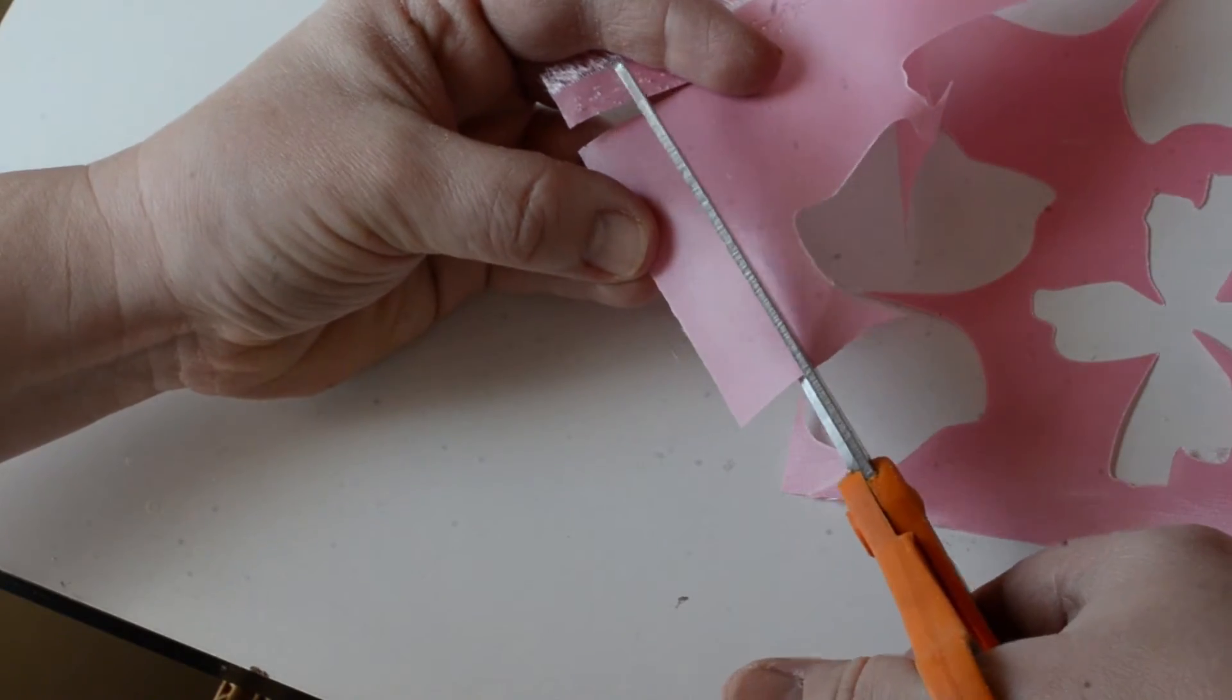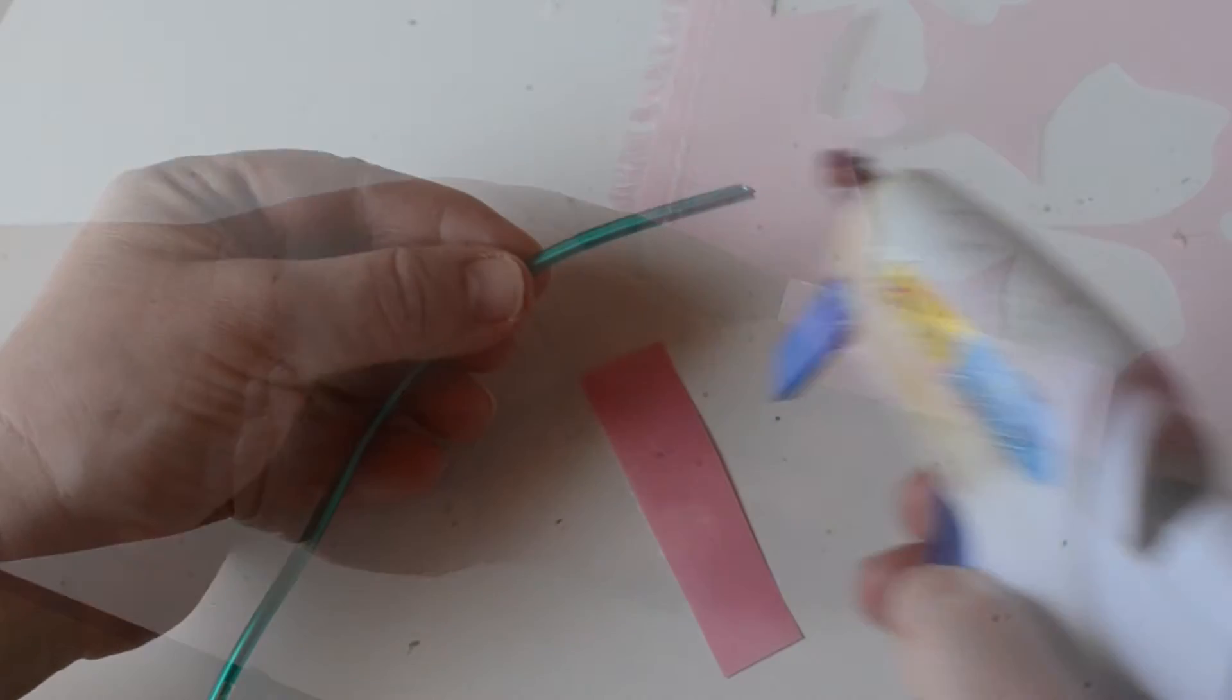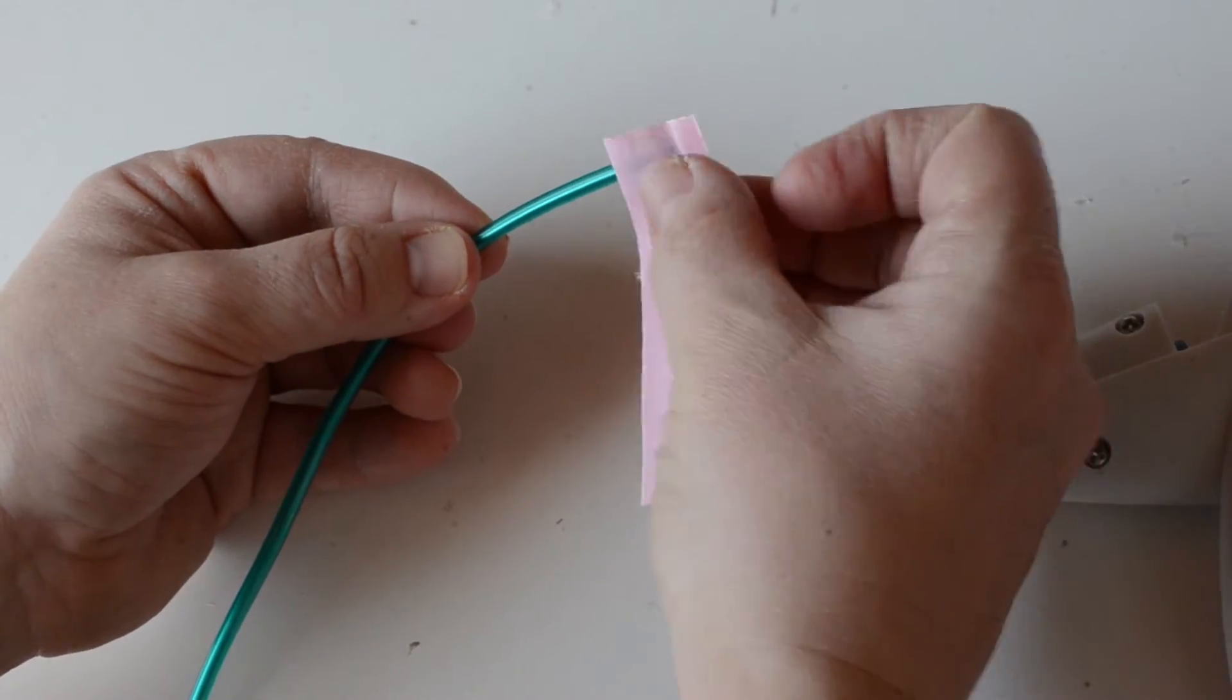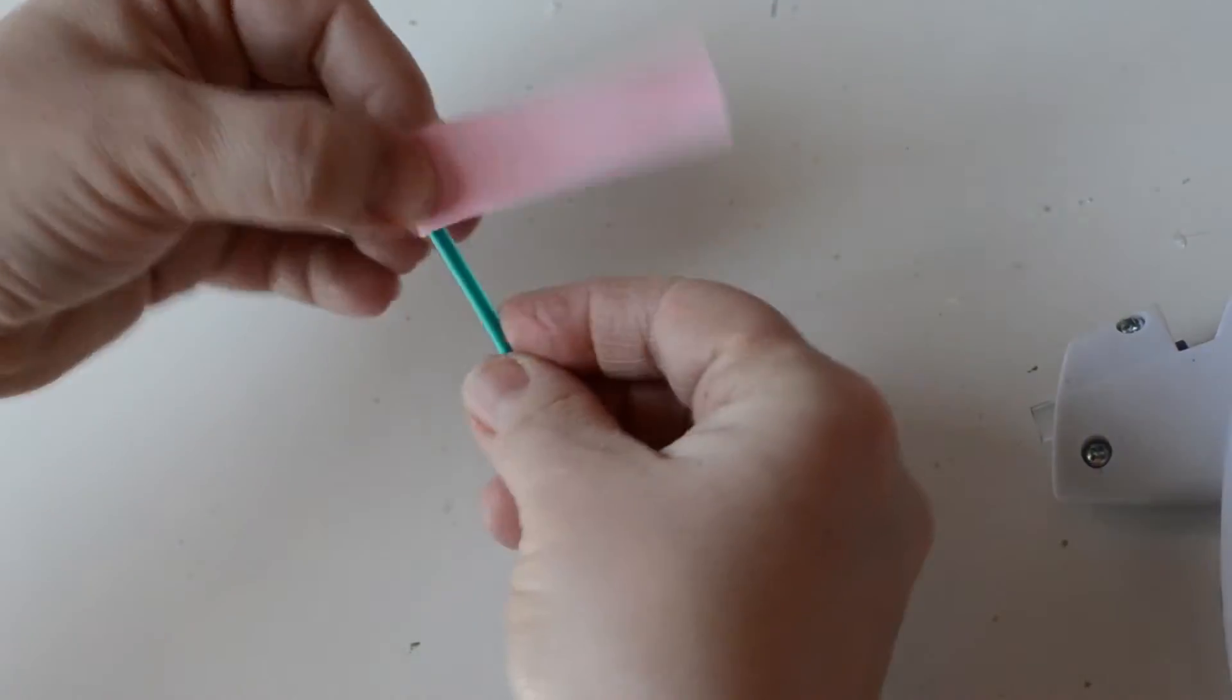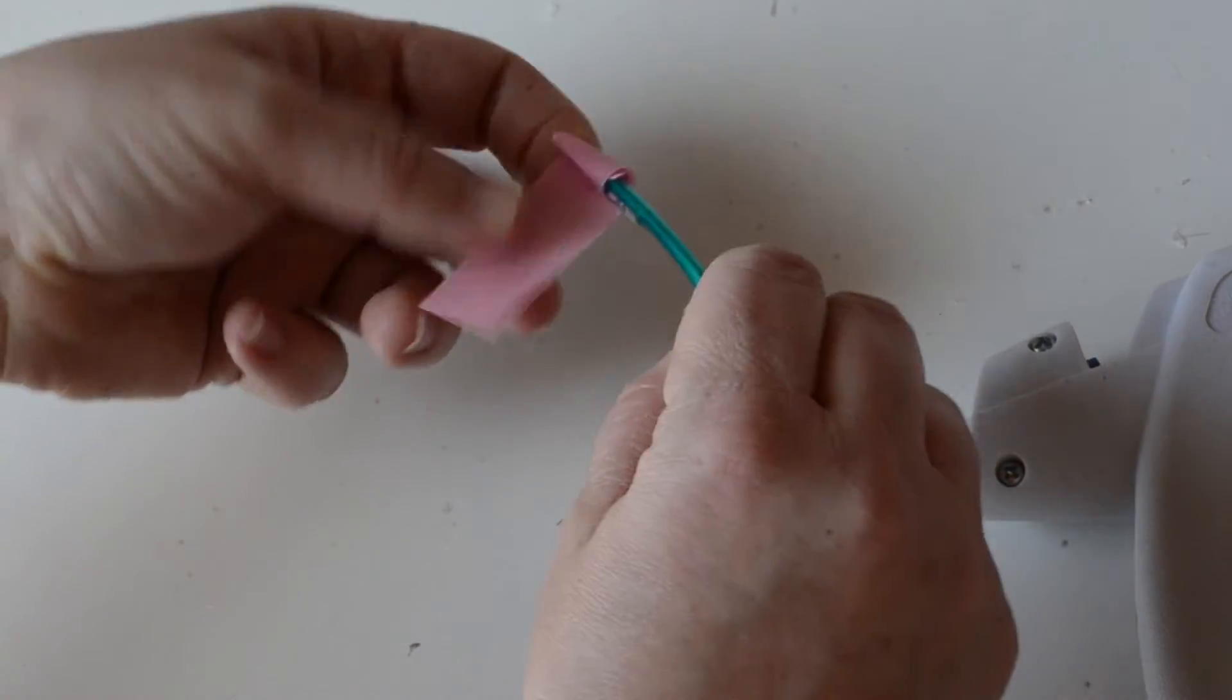Cut about a one-half inch by two inch piece from the fabric your petals were cut out of. Put glue on the wire. Then add the fabric scrap, making sure that it starts just above the top. Add glue and keep wrapping until the end.